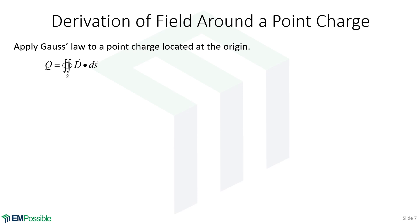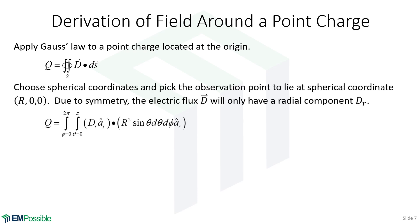In this case, let that charge be at the origin — that simplifies the math. We know that D will have only a radial component, so we're integrating over a sphere. This will be a double integral over theta and phi. We'll integrate phi from 0 to 2 pi, and theta from 0 to pi. We put in our expression for D — all we know is that it has only a radial component — and then we have our differential vector surface.